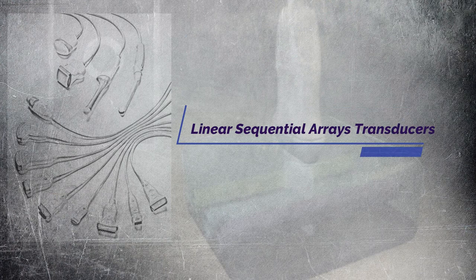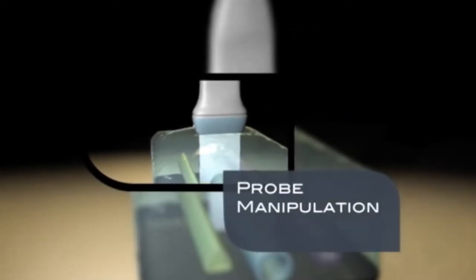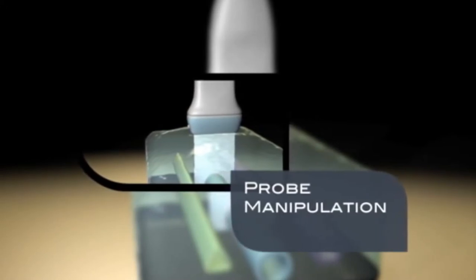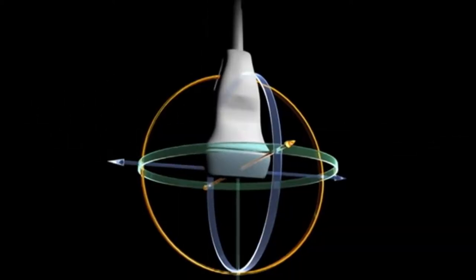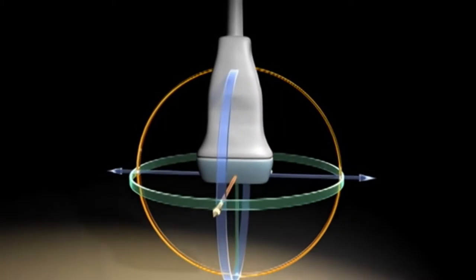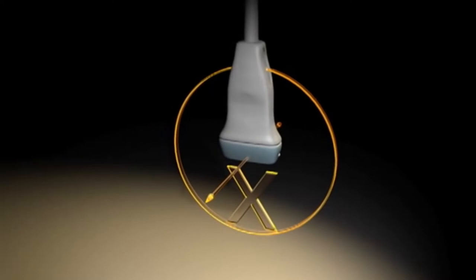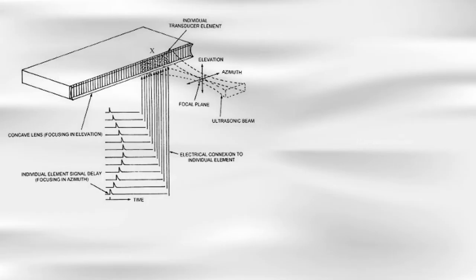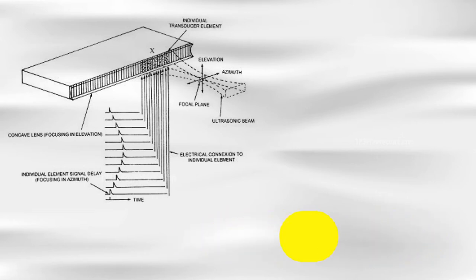Let's know about linear sequential array transducers. The scanning lines are directed perpendicular to the face of the transducer. The beam is focused but not steered. Linear array transducers are available with 512 elements in currently available ultrasound scanners. Generally, up to 128 elements are selected at a time for operation. As is obvious from the diagram, the field of view with a linear array arrangement is limited to the rectangular region directly in front of the transducer.